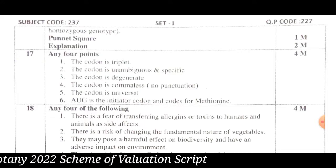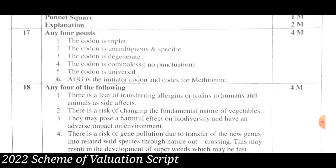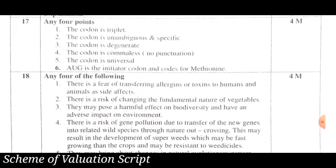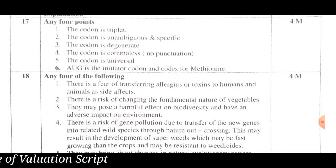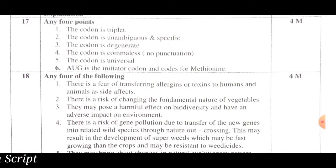The features of the genetic code: the genetic code has 6 points — it is triplet, unambiguous, and specific; it is degenerate, commaless, and universal; and there is an initiator codon AUG which codes for methionine. Six points equals 4 marks.